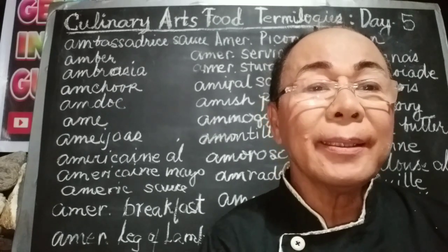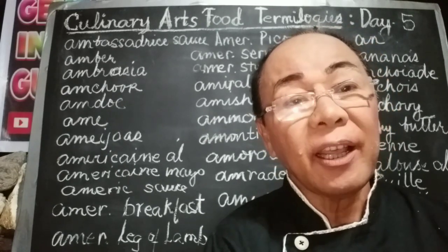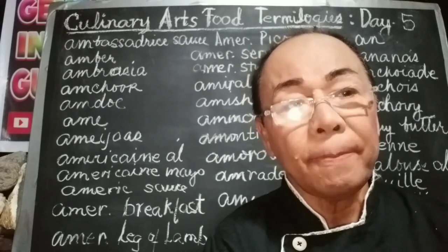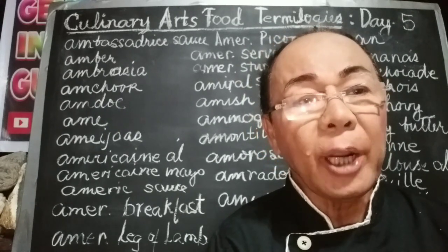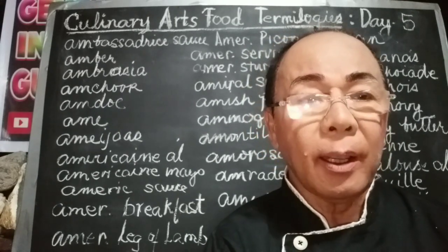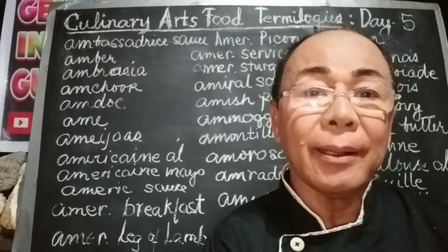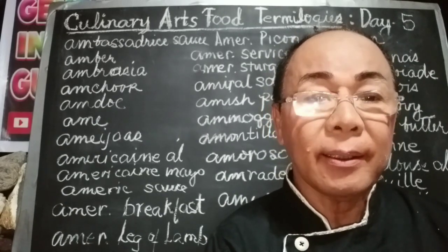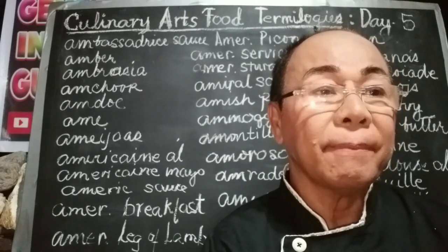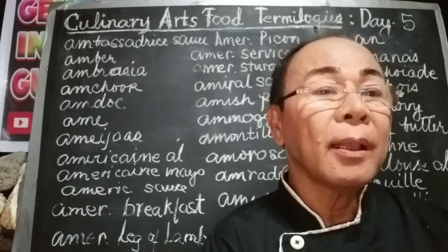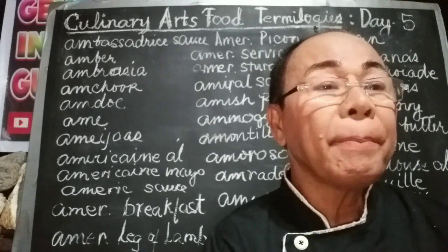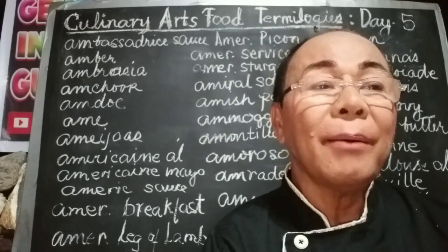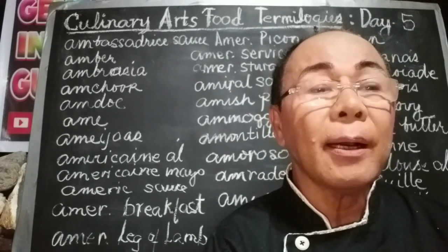Amardine, also known as qamar al-din, refers to a thin sheet of sun-dried apricots used in Arabic cuisine and often in sweet and sour sauces.